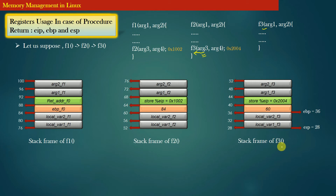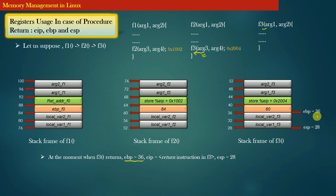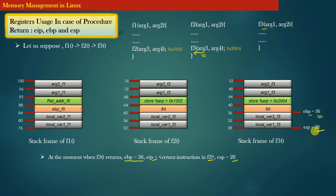At the moment when function f3 returns, the value of the base pointer register is 36 — that is the address currently stored in the base pointer register. The EIP register holds the address of the return instruction in function f3, and the stack pointer stores the bottom-most address of the stack memory, which is the top of the stack.